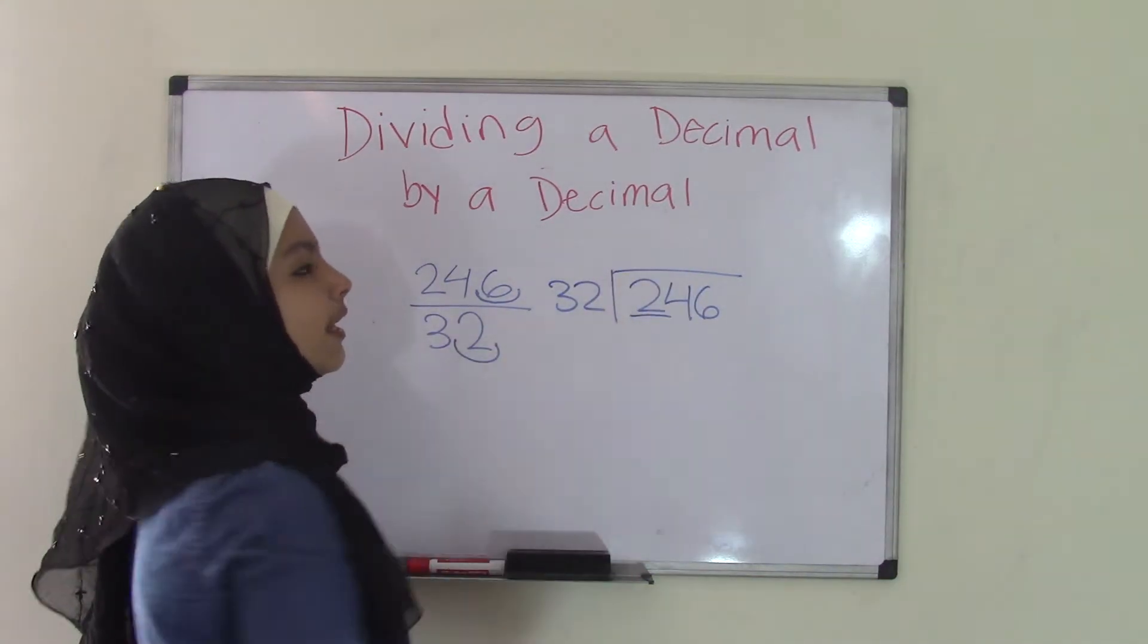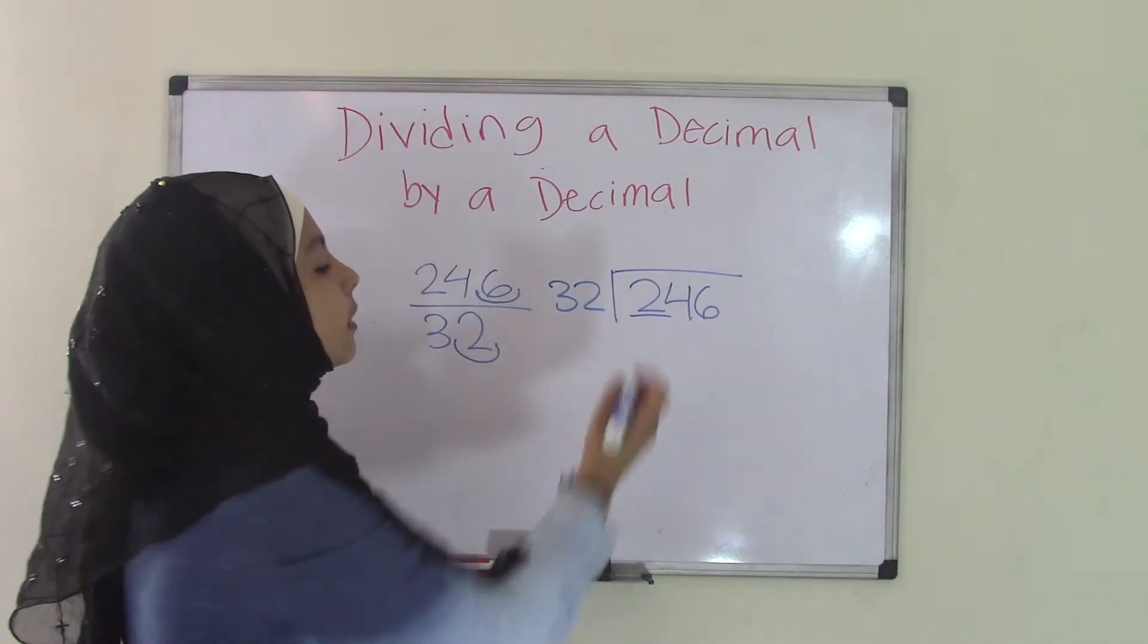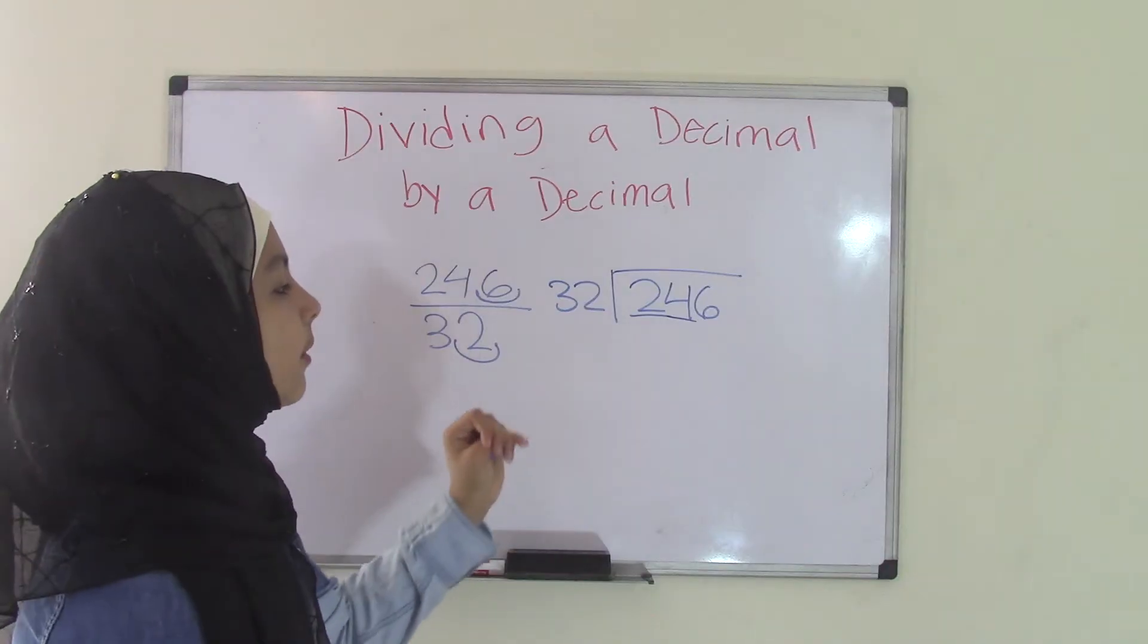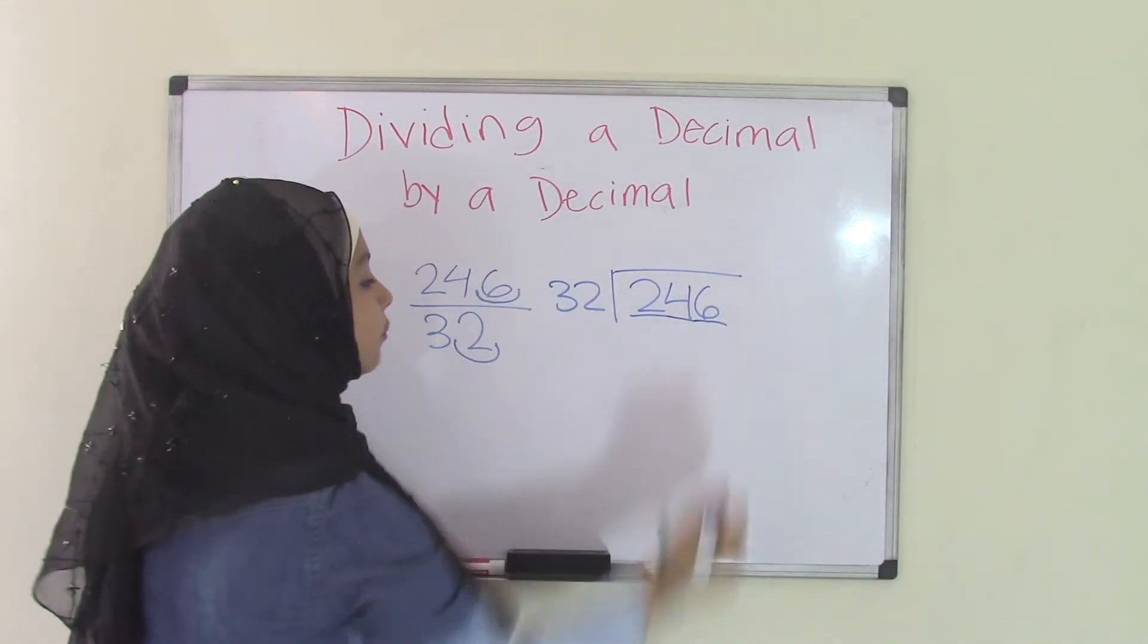First number is 2. Can you divide 32 by 2? No. How about you combine the next number so now it becomes a 24. You still can't do 24 divided by 32. So what you're going to do is combine the last number which is 246.